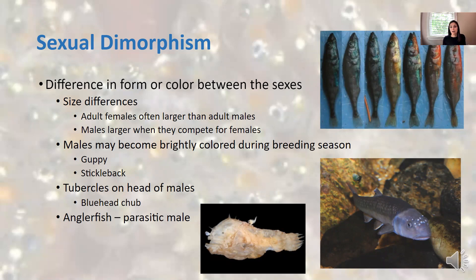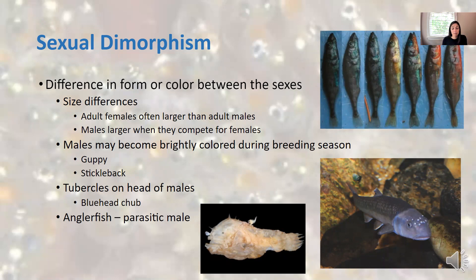In some fish there's sexual dimorphism in color. During breeding season, the fish change color, and you can see the progression from non-breeding to breeding coloration. Guppies and stickleback fish exhibit this color change. The blue head chub from our list exhibits a different kind of sexual dimorphism - they have breeding tubercles on their head, bony projections that pop out of the skin and retract when breeding season is over. The head of the blue head chub also gets much more blue during breeding season, and that's only in males.